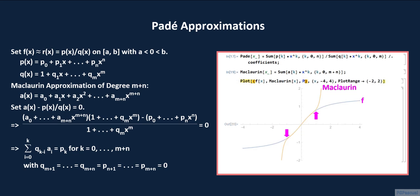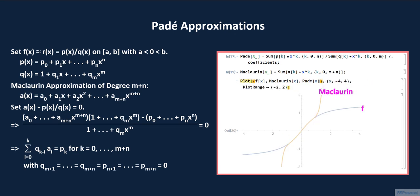Now we insert the Padé approximation into the plot command and evaluate. The green curve, which is that of the Padé approximation, stays close to f even when the Maclaurin approximation has already strayed far from f.